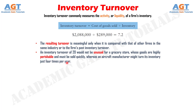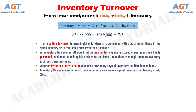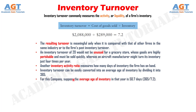Another inventory activity ratio measures how many days of inventory the firm has on hand. Inventory turnover can be easily converted into an average age of inventory by dividing it into 365. For this company, the average age of inventory is 50.7 days, obtained by dividing 365 by 7.2. This value can also be viewed as the average number of days sales in inventory.